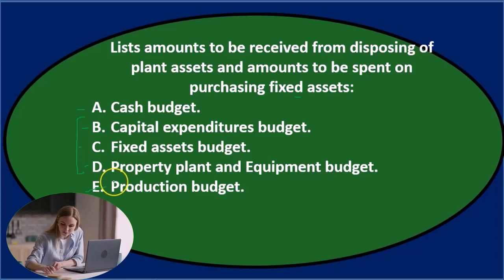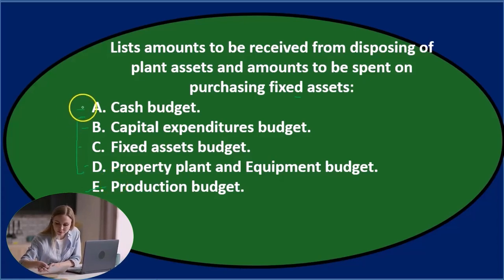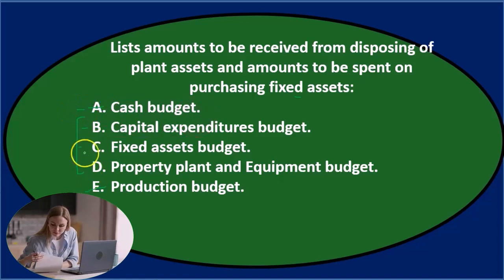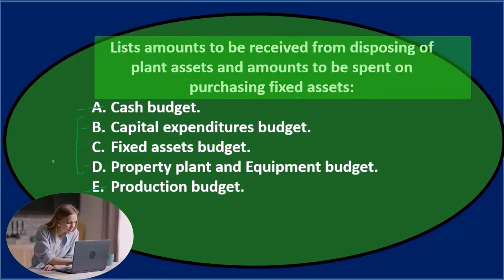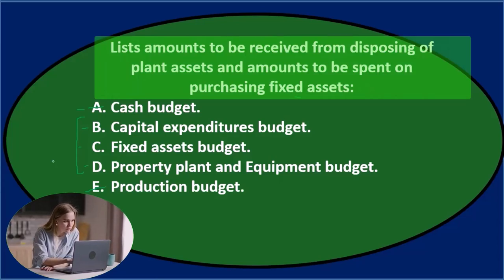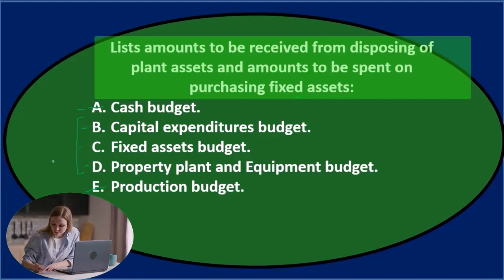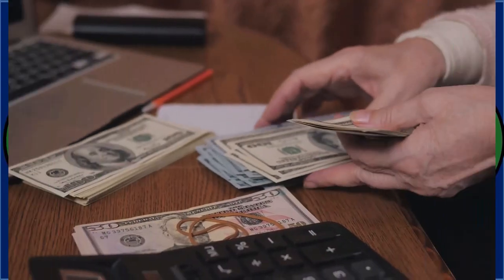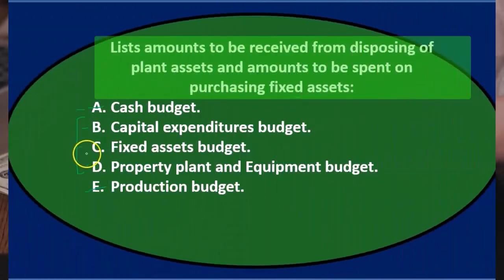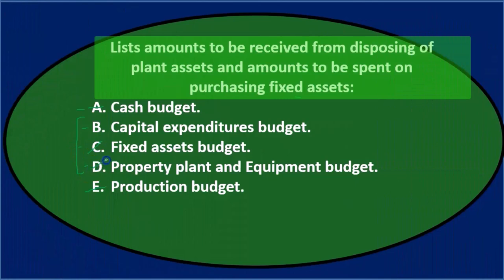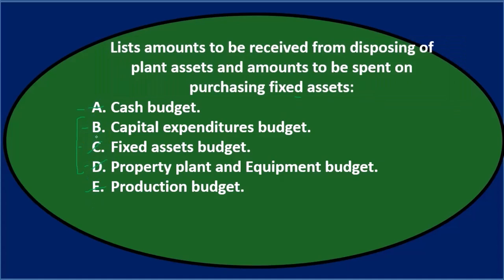It also could be called property, plant, and equipment. I'm going to eliminate A and say that one of the remaining options has got to be the proper wording. Let's read through it again: lists amounts to be received from disposing of plant assets and amounts to be spent on purchasing fixed assets. This is the amount we're spending and receiving for fixed assets or property, plant, and equipment. You would think C or D would be reasonable names for it, but we actually call it the capital expenditures budget.